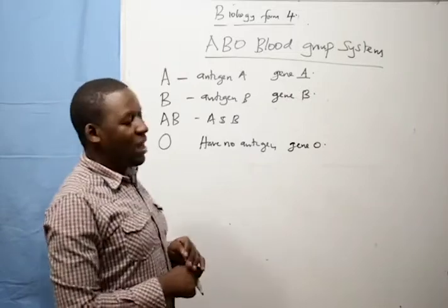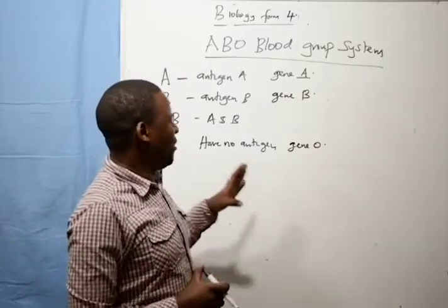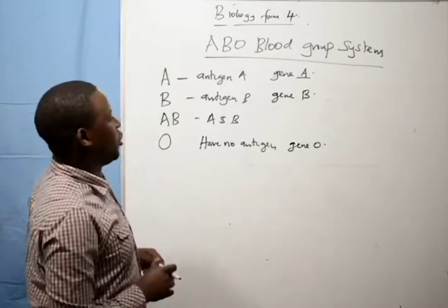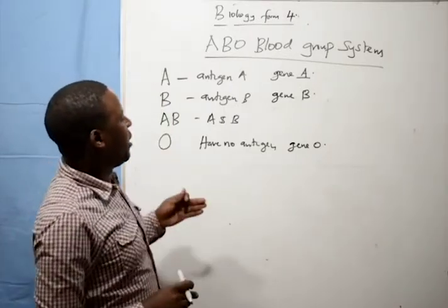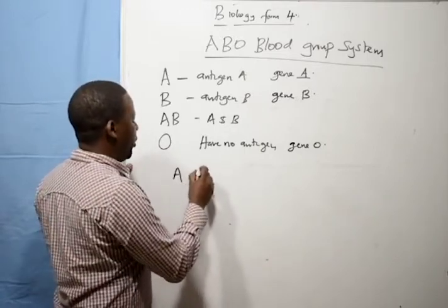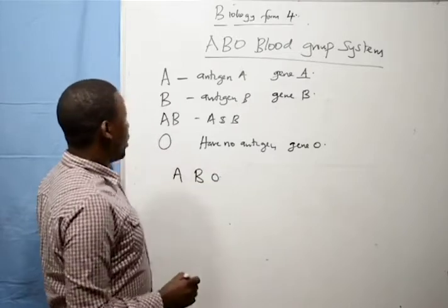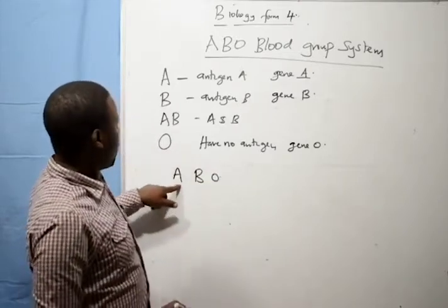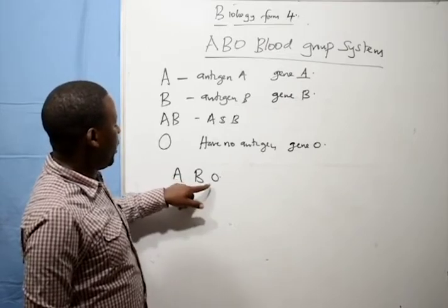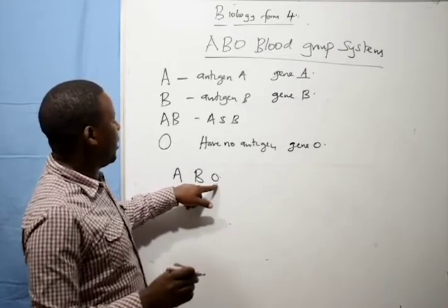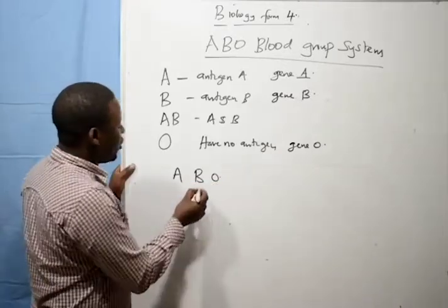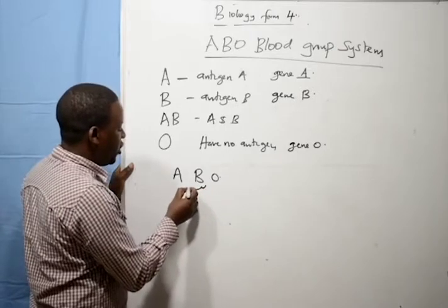Those who don't have an antigen have gene O, which prevents the formation of any antigen. Therefore, there are 3 major genes: gene A, gene B, and gene O. Gene A causes the presence of antigen A, gene B causes the presence of antigen B, and gene O leads to the presence of no antigen.